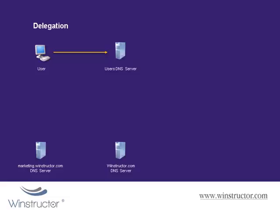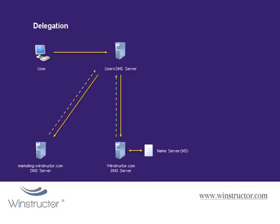If a user on the internet wants to access a host on the marketing.winstructor.com domain, they'll first contact their own DNS server. The DNS server will contact the DNS server authoritative for the winstructor.com domain. That server knows it isn't responsible for marketing.winstructor.com, but it has an NS record directing all marketing.winstructor.com requests to the appropriate server. It sends back the IP address of the DNS server in the marketing.winstructor.com domain. The user's DNS server then contacts that server directly, gets the host IP address, caches it, and forwards it to the user's computer. The user's computer caches that IP address and contacts the host.